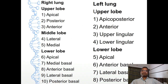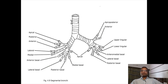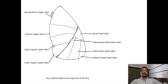In left lung, two lobes are present: upper lobe and lower lobe. In the upper lobe, bronchopulmonary segments are: apicoposterior, anterior, upper lingual, and lower lingual - four segments. In the lower lobe: apical, anterior basal, lateral basal, and posterior basal. In this lower lobe there is no medial basal. Therefore in left lung eight bronchopulmonary segments are present.